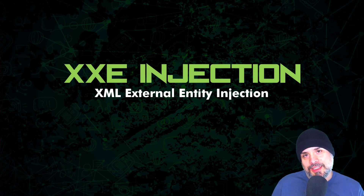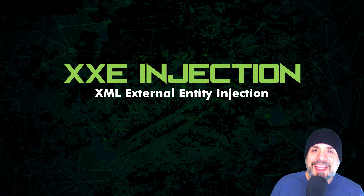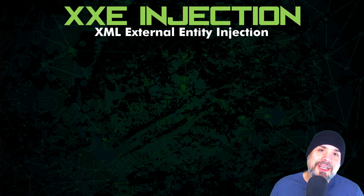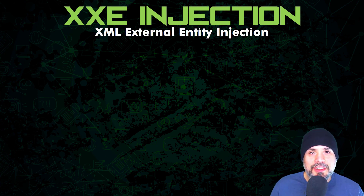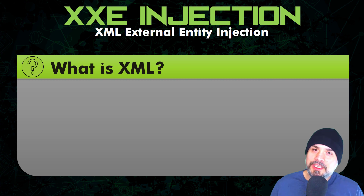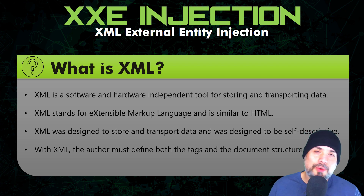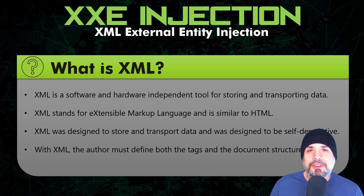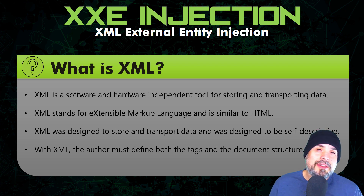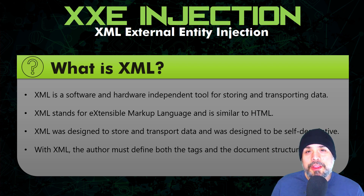What is up, my hacker friends. Today we are going to talk about XXE injection, or XML external entity injection. Before we get into the injection stuff, we first need to learn exactly what XML is. XML is a software and hardware independent tool for storing and transporting data. It stands for extensible markup language and is pretty similar to HTML. It was designed to store and transport data and is also designed to be self-descriptive, unlike HTML. With XML, the author must define both the tags and the document structure.